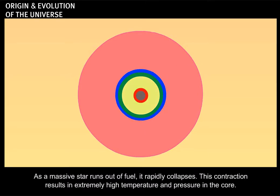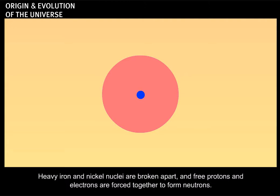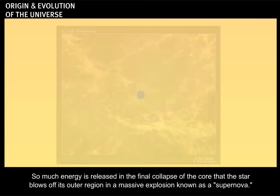As a massive star runs out of fuel, it rapidly collapses. This contraction results in extremely high temperature and pressure in the core. Heavy iron and nickel nuclei are broken apart, and free protons and electrons are forced together to form neutrons. So much energy is released in the final collapse of the core, that the star blows off its outer region in a massive explosion known as a supernova.